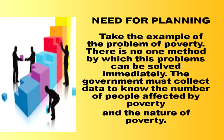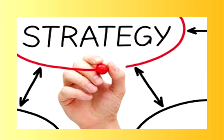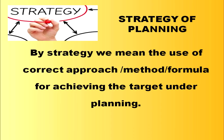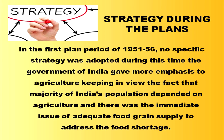We need to understand the strategy for planning — what does this strategy mean? The strategy of planning means the exact manner by which we will tackle the problem, the use of the correct approach or method or formula for achieving the target. In the first plan period of 1951 to 1956, no specific strategy was adopted.